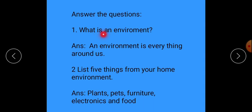First question: What is an environment? An environment is everything around us. Next question: List five things from your home environment. Answer is: plant, pets, furniture, electronics, and food.